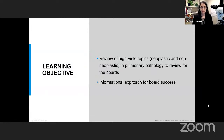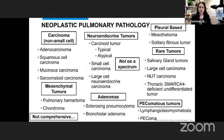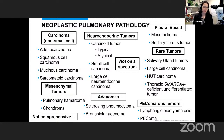Most of my talks tend to be more pragmatic about signing cases out, but for this particular talk it's more informational and aimed at helping with board success and multiple choice questions. Here are some neoplastic pulmonary pathology topics — not a comprehensive list, but the areas I'll review today. We'll cover non-small cell carcinomas, small cell carcinomas, all the neuroendocrine lesions — which are not on a spectrum — pleural-based lesions like mesothelioma, solitary fibrous tumor, rare tumors, adenomas, mesenchymal tumors, lymphangioleiomyomatosis, and PEComas.